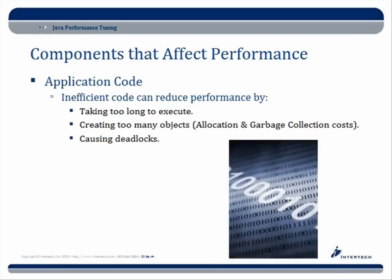So with the JVM we've got the garbage collector, and of course we have our application code — that's an area we definitely need to consider when looking at optimizations. But I really want to stress: go to this almost last. Make sure you've identified that it's really your application code causing these bottlenecks. Inefficient code can reduce performance by taking too long to execute, you can create too many objects incurring allocation and garbage collection costs, and of course causing deadlocks which can make your application hang or perform slowly.